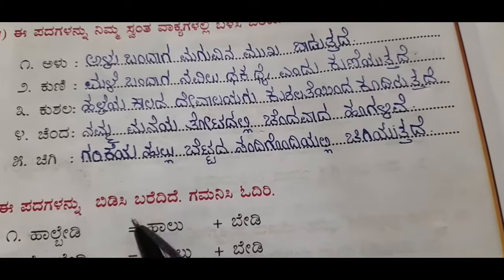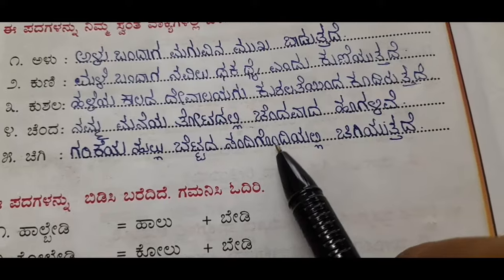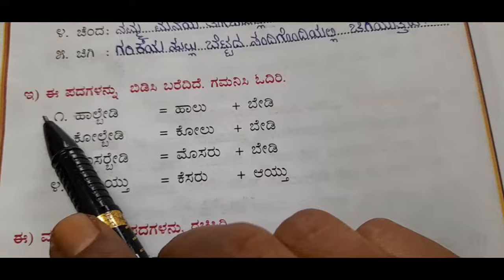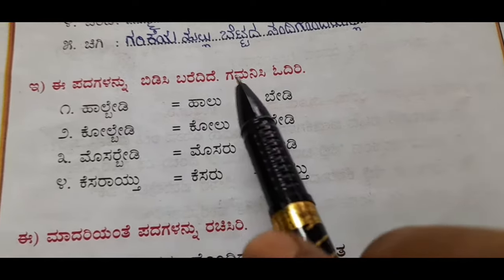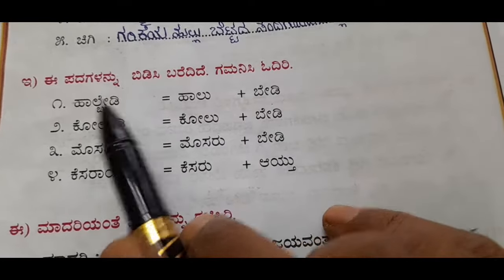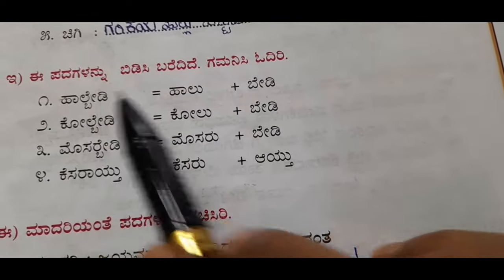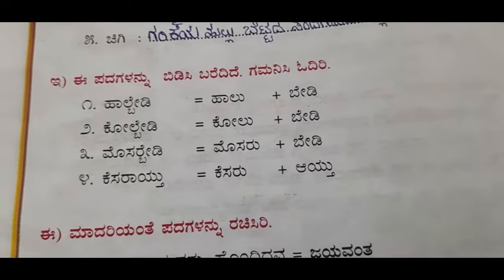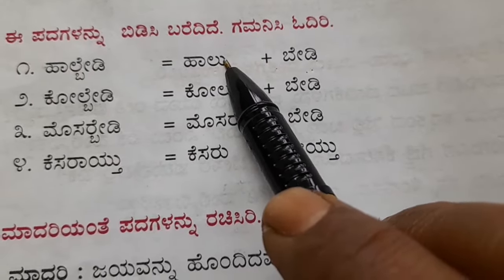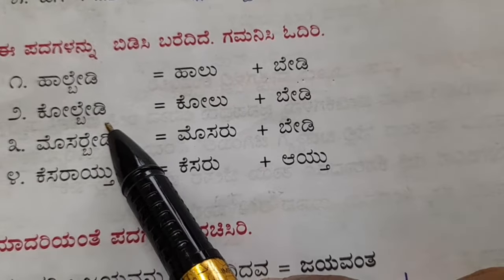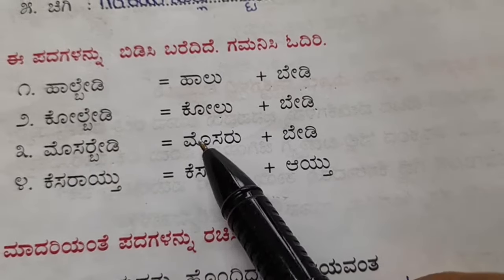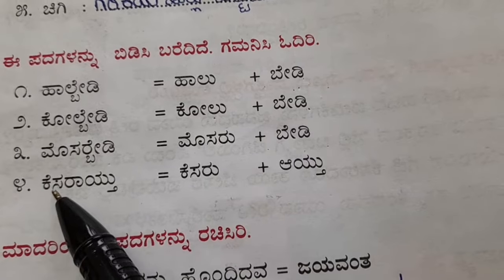Chanda means beautiful: namma manaya thotadalli chandavadha hoogalivay — in my house garden there are beautiful flowers. Chigi means to grow: garikeya hullu betta da sandhi gundhigalalli chigiyutthave — grass grows in every small crevice of the mountain. Next, E padakalannu bidisi baradi ghe gamanisi nodi — observe how these combined words are split into two: haal bedi = halu plus bedi (milk plus asking), kool bedi = koolu plus bedi (stick plus asking), mosar bedi = mosaru plus bedi, kesar aithu = kesaru plus aithu.